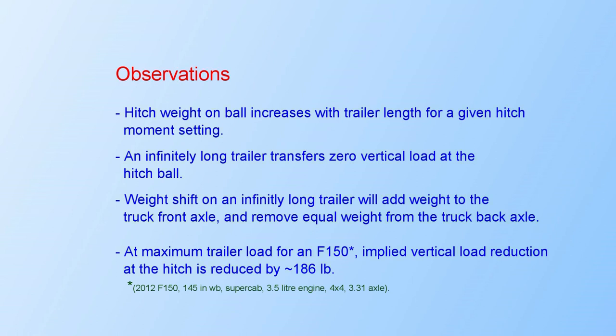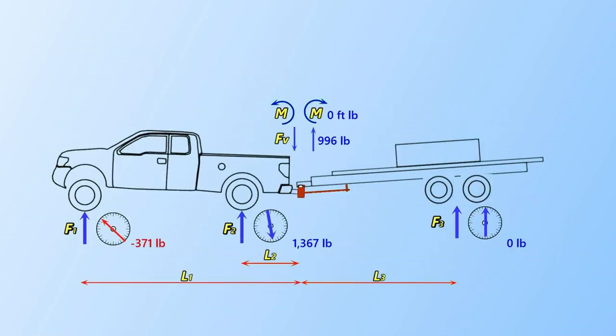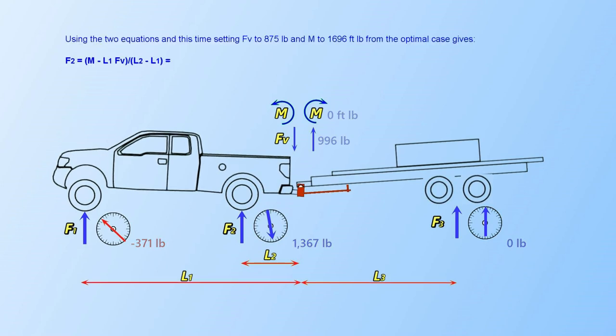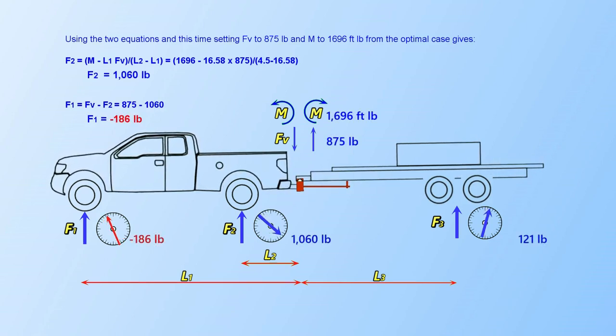In my truck example, vertical load at the trailer hitch is only reduced from 1367 pounds to 1060 pounds or a 22% reduction, while the front axle weight change is a factor of two. Looking at our calculated optimal loading, we now have 121 pounds transferred from the tongue to the trailer wheels, a net loss of 186 pounds on the truck front axle and a 1060 pound gain on the rear axle from trailer loading.